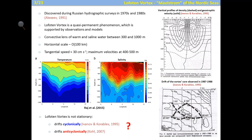It has been reported that the vortex is not stationary and it drifts, but there are some contradictory reports. The first mention of the vortex said that it drifts cyclonically, based on several hydrographic surveys. But based on model output, a more recent paper showed that the vortex drifts anticyclonically. So this is an open question that I'm going to address.